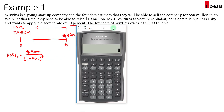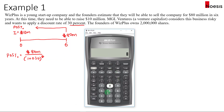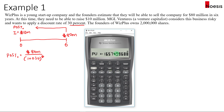Using $80 million as your FV, six years as N, and 30% as I/Y, with zero as PMT, we compute PV — so that's about $16.5741 million.